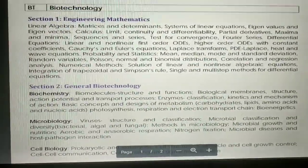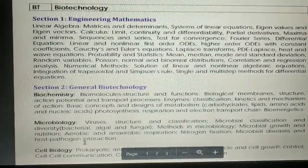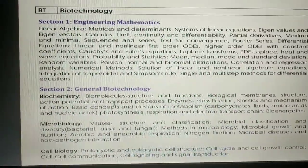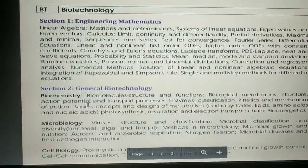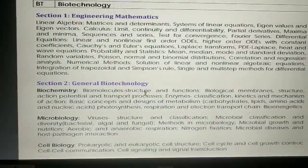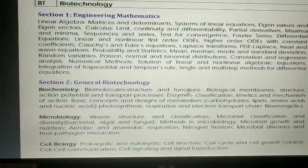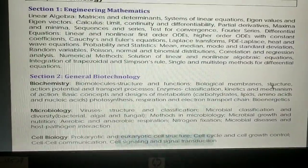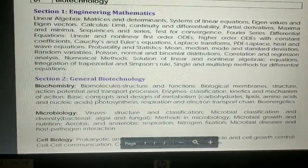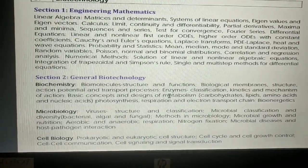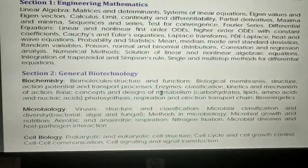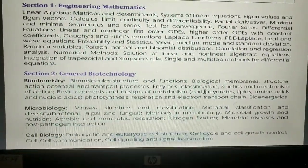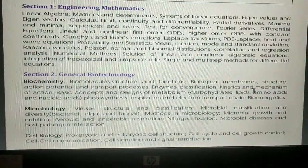This is Section 2, which is the General Biotechnology section. Here we study Biochemistry. In Biochemistry, you will find biomolecules — their structures and functions. Then there are biological membranes, structure, action potential, and transport processes. You can also study enzyme classification, and in some cases there are questions from enzyme kinetics and mechanisms.